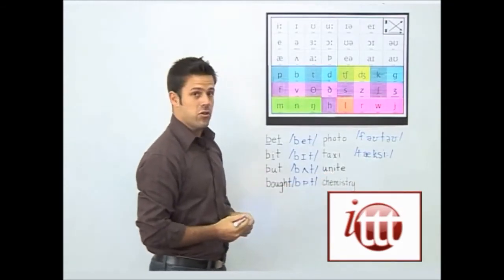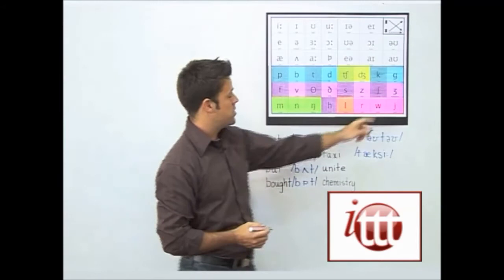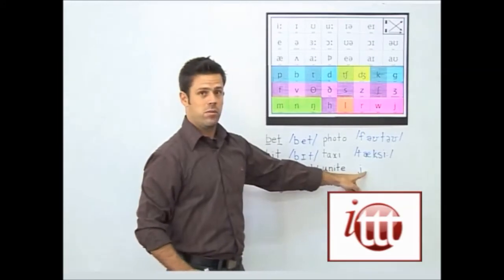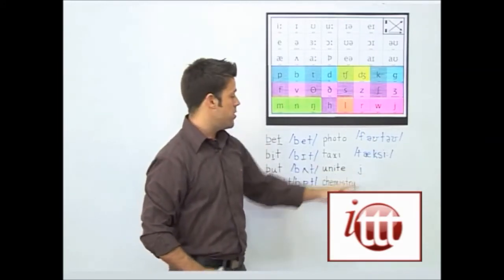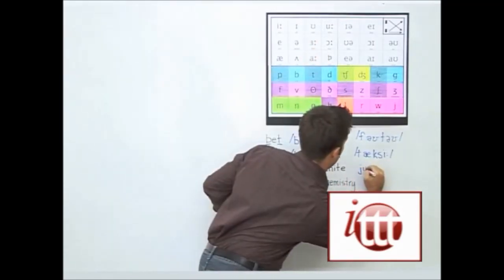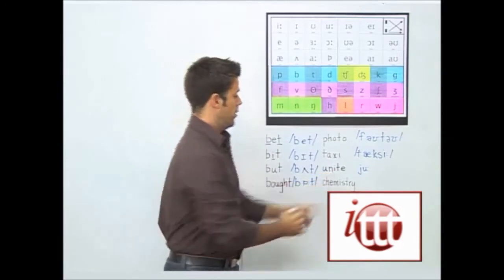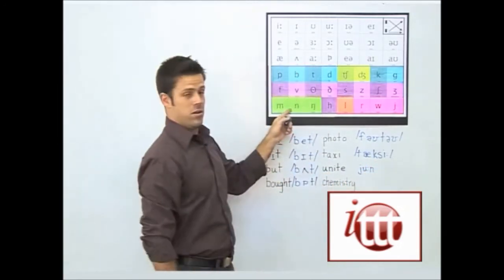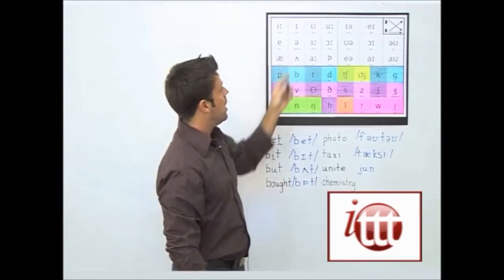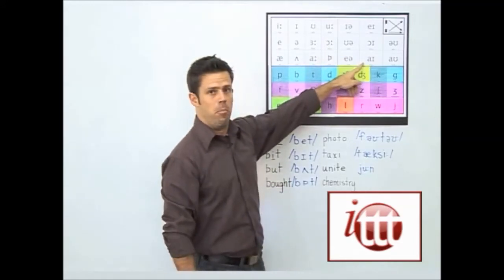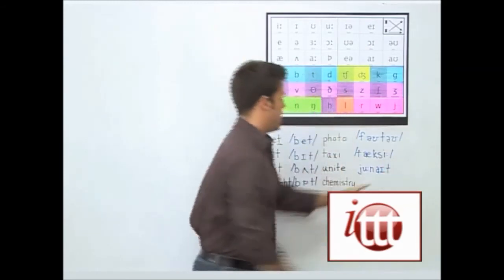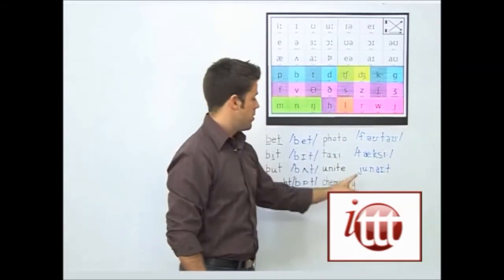For unite, as mentioned previously, there's a slight Y sound at the beginning, so we begin with our Y phoneme, then continue with U, N, and the vowel sound as in 'by' for the IGH part, and our final T sound — giving us the phonetic spelling of unite, five phonemes.